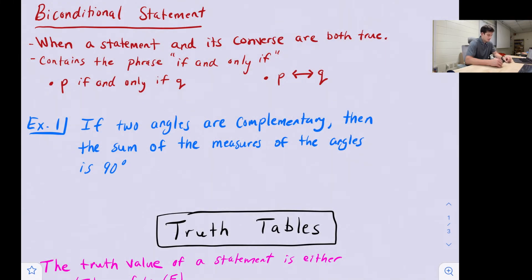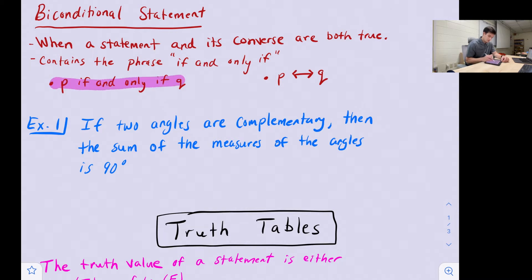If we have a conditional statement that is true and its converse is true, then we can write it as a biconditional statement. A biconditional statement contains the phrase 'if and only if,' and we can see it written using these symbols. We can say p if and only if q, or p implies q and also q implies p.